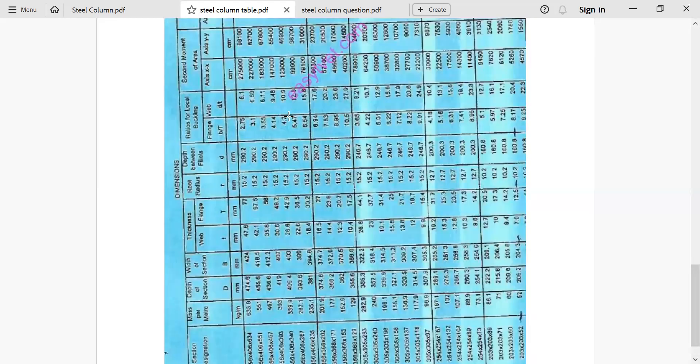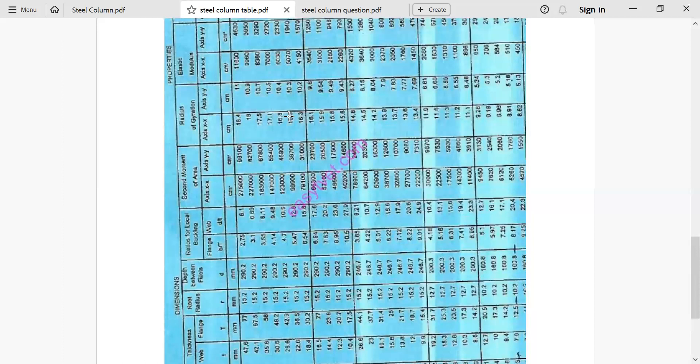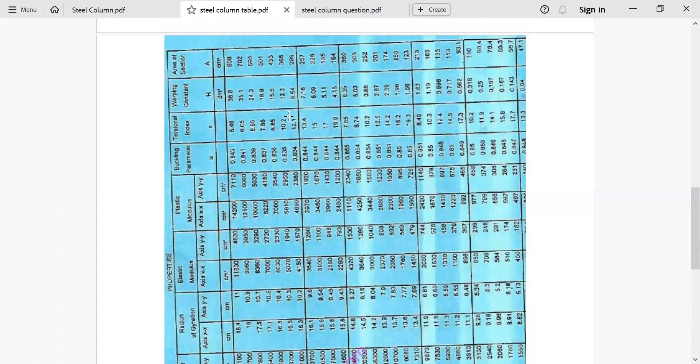And then let me scroll a bit. Radius of gyration. You see, we have along axis XX and axis YY. That is where we get Rxx and Ryy, provided you read along your section. Then the area of section is here. Like for our case, you find it is 66.3 centimeter square.